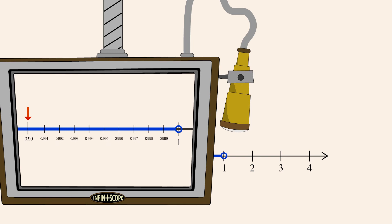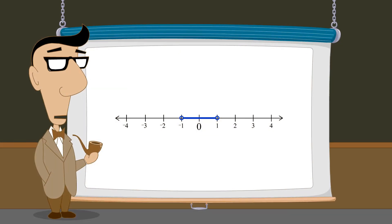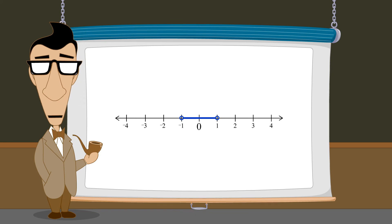But this number is still not the largest because 0.999 is larger. But this is still not the maximum since 0.9999 is larger. No matter how many nines we keep tacking on, we will never reach a maximum number in the interval. No matter which number we pick, there will always be a number closer to 1. The fact is that there is no maximum number in an open interval. This same logic explains why it is also impossible to find a minimum number in an open interval.